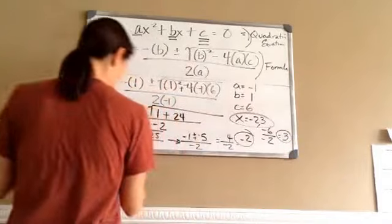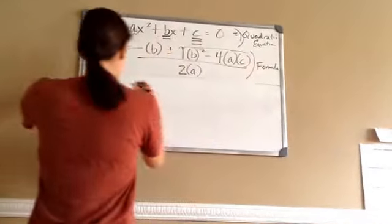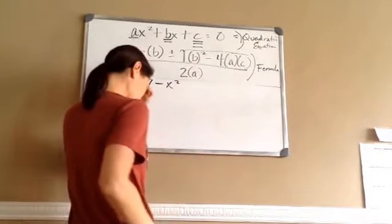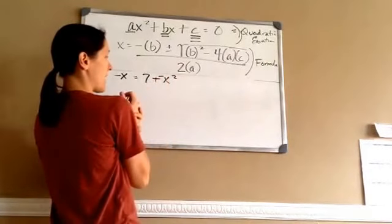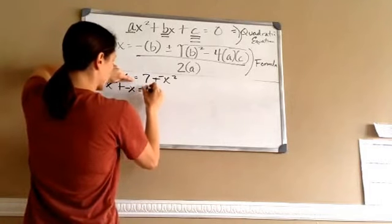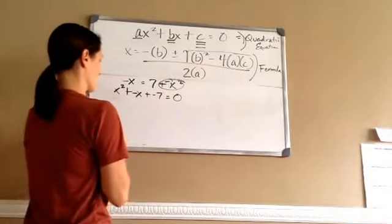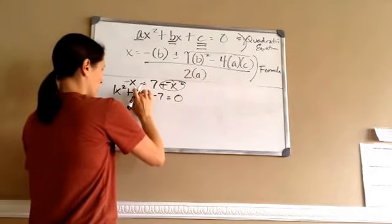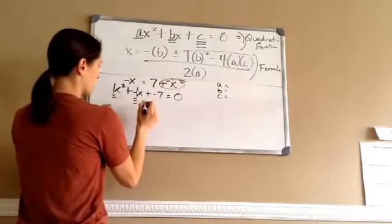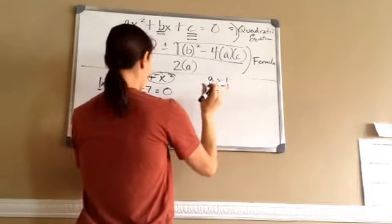Let's do one more. Use the quadratic formula to find the values of X that satisfy this equation: negative X equals 7 minus X squared. I'm going to move this negative X squared over, giving me X squared plus negative X equals 7. Then I move the 7 across, which becomes negative 7, and put equals 0. I'm going to put 1s in front: 1X squared, negative 1X, minus 7 equals 0. So A is 1, B is negative 1, and C is negative 7.